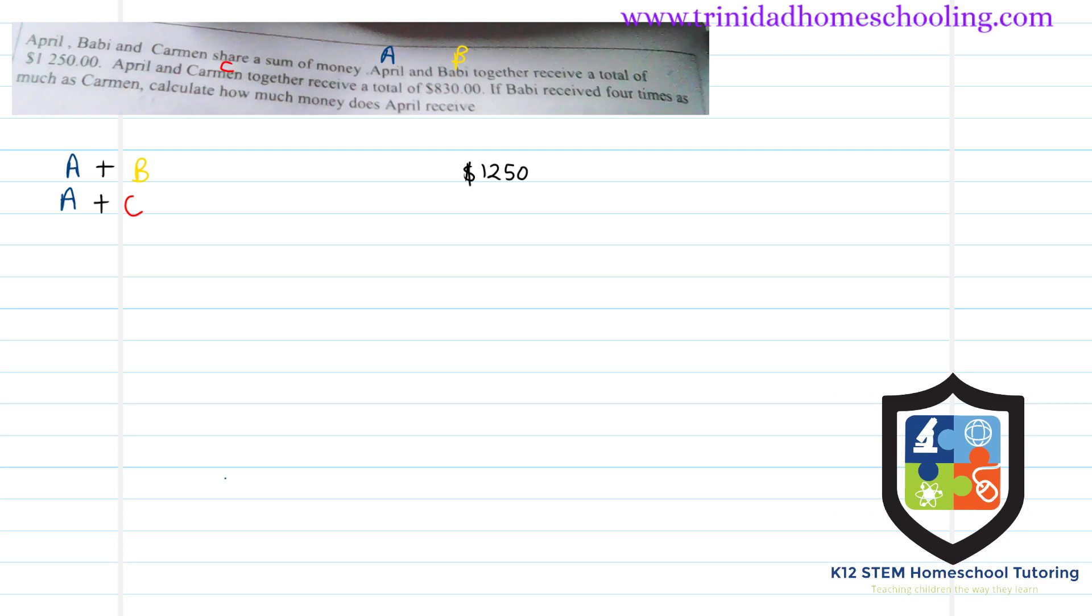They also said that April and Carmen this time receive a total of $830. Now if we draw a little model to represent April's share, April's share will be the same here.